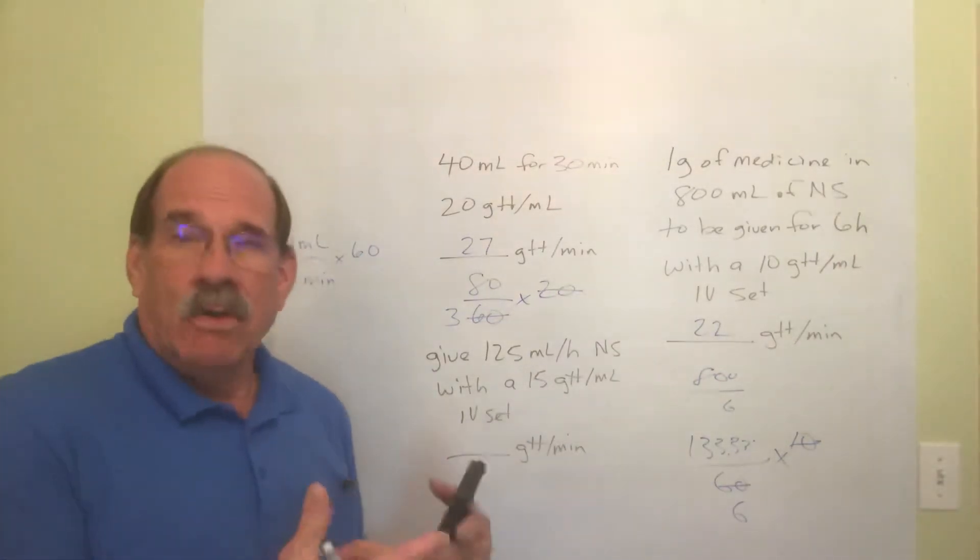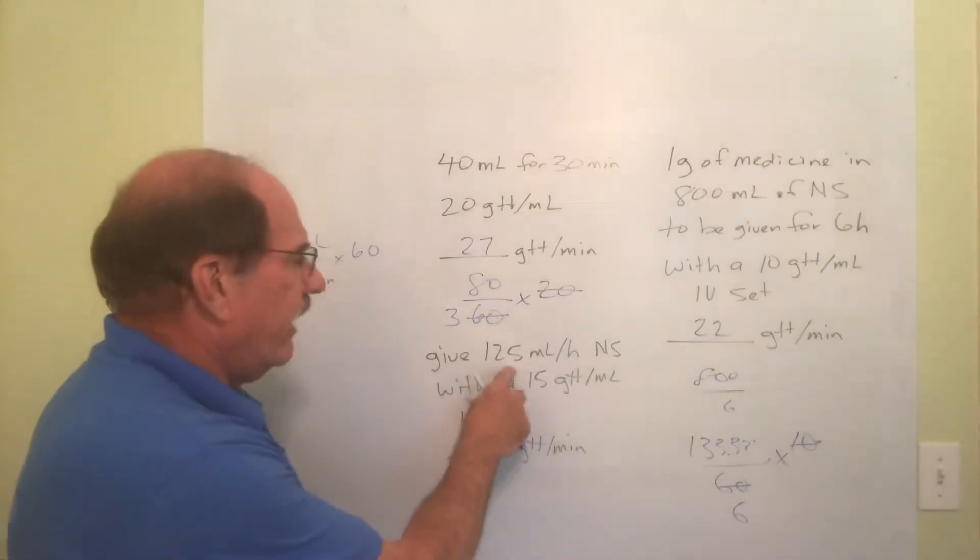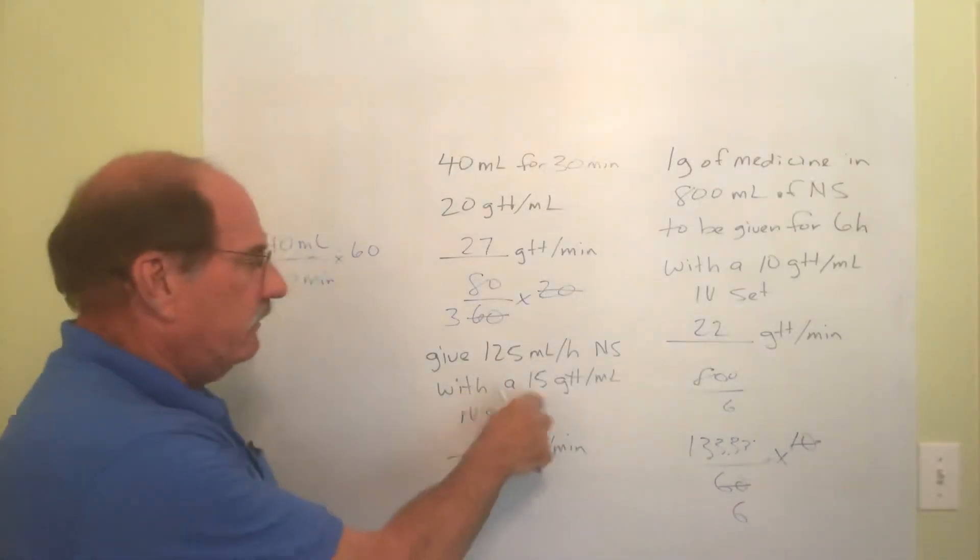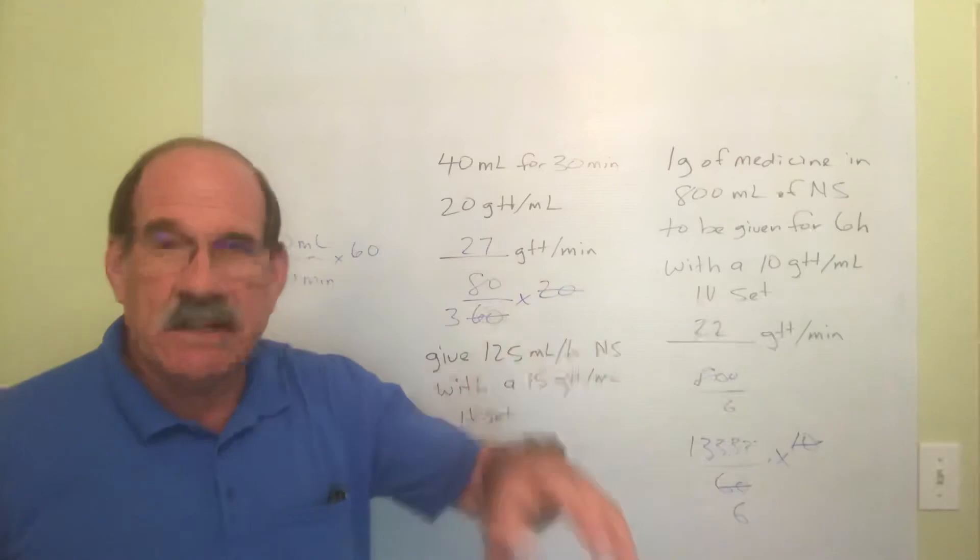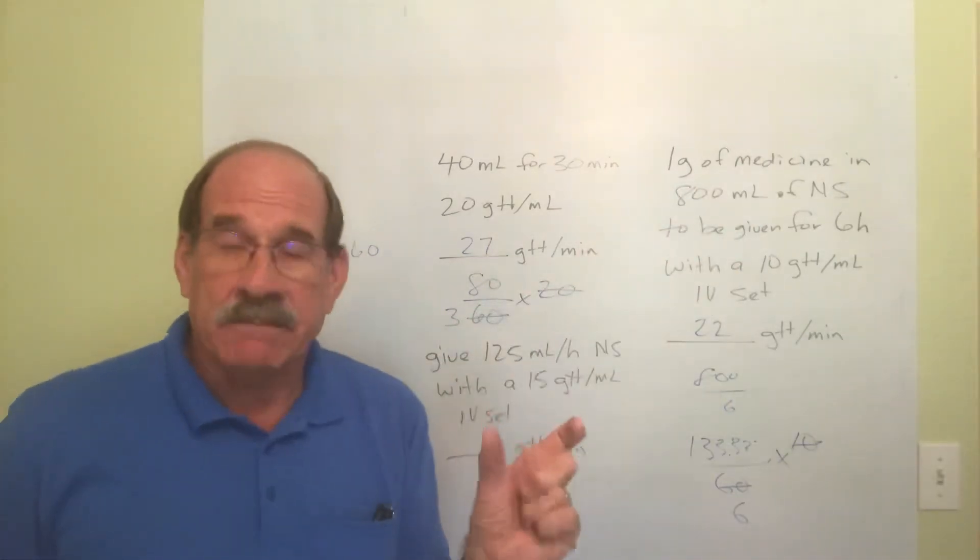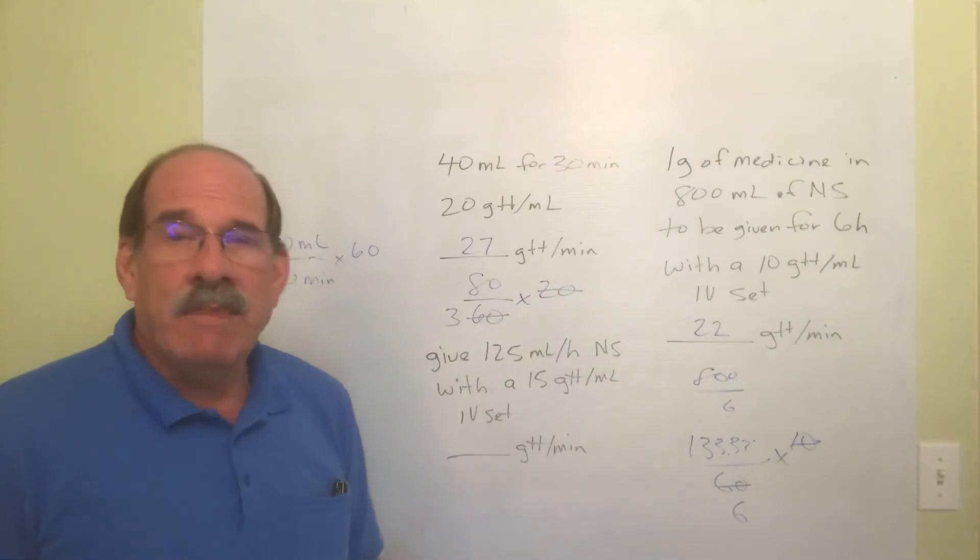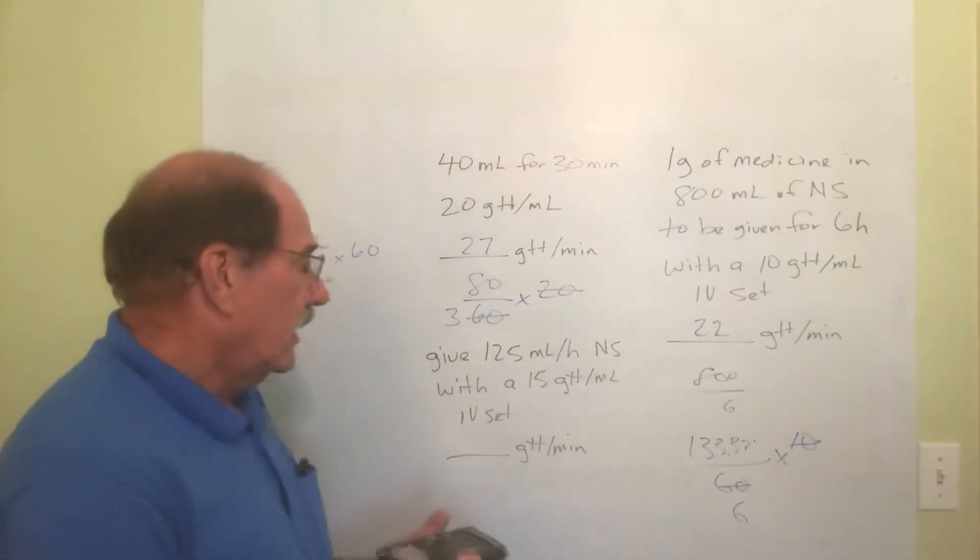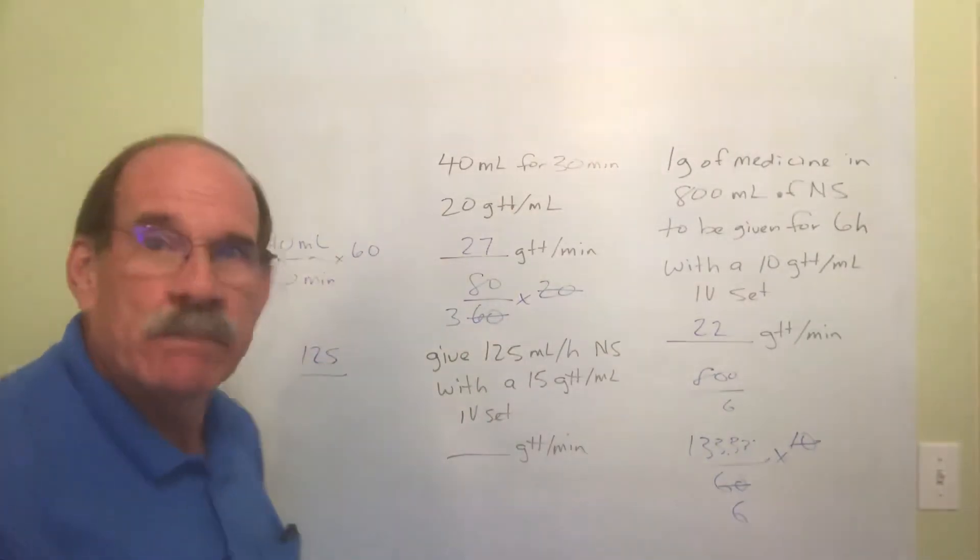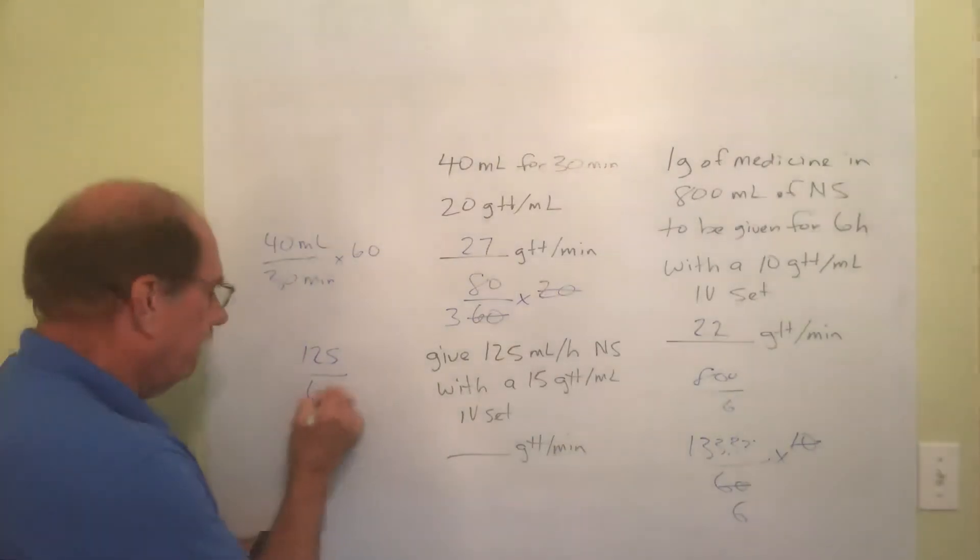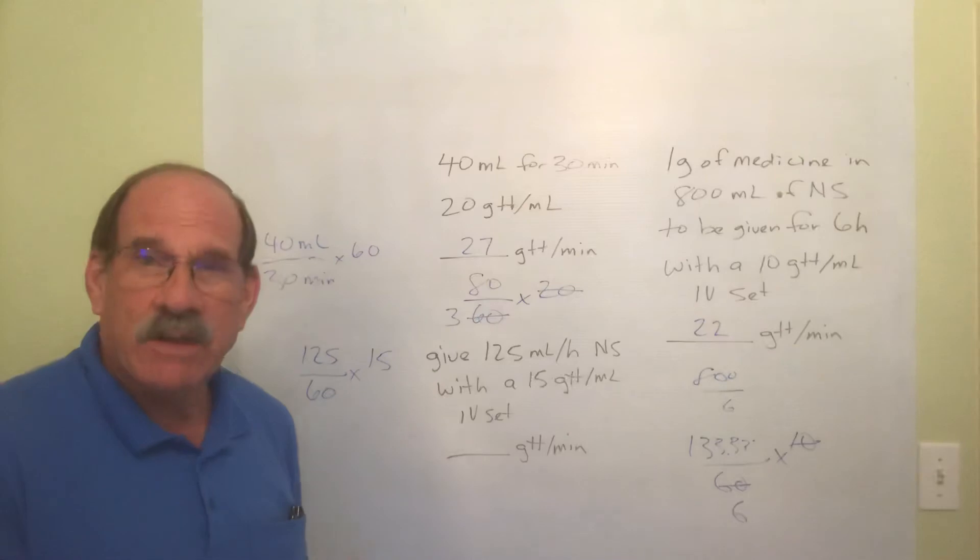Let's look at this. You'll see some of these on the homework and quiz. This is so simple it's almost embarrassing. You're supposed to give 125 milliliters per hour of normal saline with a 15 drop per milliliter IV set. Up to now you had to do some math to calculate V, the milliliters per hour. Now it's just told to you directly. You may be just told what V is. I don't do any math to find V - I'm already told V is 125.